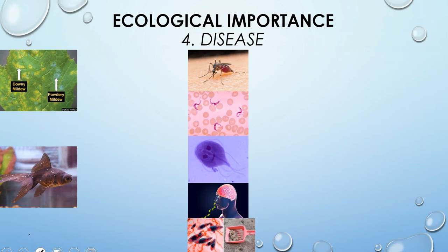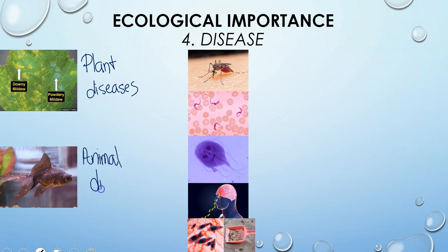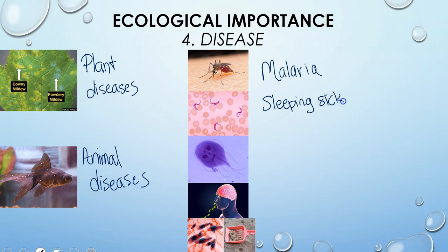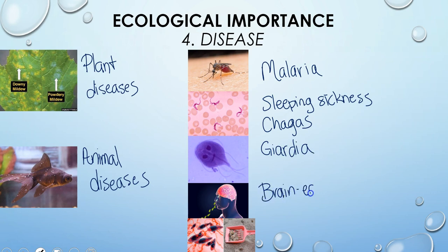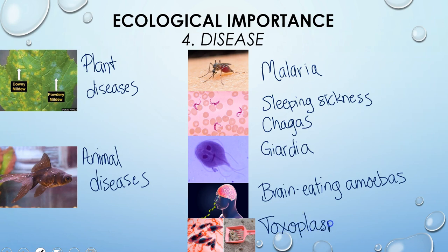Protists can also be harmful. They often cause plant diseases like downy mildew and powdery mildew, and animal diseases. If anyone's fish has ever gotten white spots, that is called ick — and that is a protozoan parasite. Protists can also cause human diseases like malaria, sleeping sickness, and Chagas, which are similar diseases, as well as Giardia, which causes intense diarrhea. We also have brain-eating amoebas — this is why you should be careful with neti pots, as well as making sure water doesn't get up your nose in a freshwater stream or pond. And then also toxoplasmosis, which is transmitted through cat feces, which is the reason we always bag up cat waste instead of putting it directly into the trash.